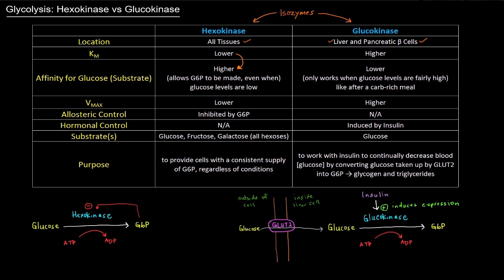Glucokinase has a higher KM and thus a lower affinity for glucose. Because hexokinase has a lower KM and higher affinity for glucose, it binds to glucose and catalyzes the reaction even at lower substrate concentrations, which allows glucose 6-phosphate to be made even when glucose levels are low.